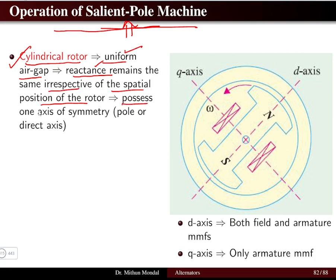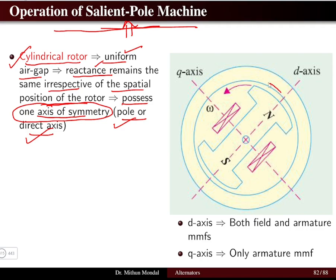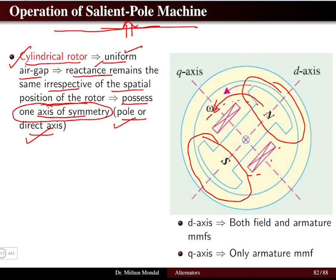The cylindrical rotor possesses one axis of symmetry — that is the pole or the direct axis. Since the cylindrical rotor has a uniform air gap and reactance remains the same, only one axis of symmetry exists. However, this is not the same for the salient pole machine. In a salient pole machine, the pole projects out, and as the rotor rotates, the air gap flux is not uniform, so the reactance is not the same. We therefore deal with two different axes of symmetry: the d-axis and the q-axis.